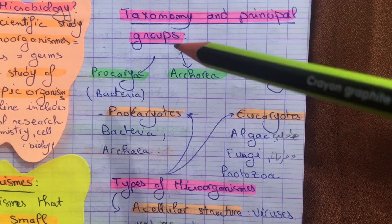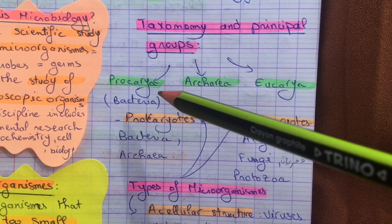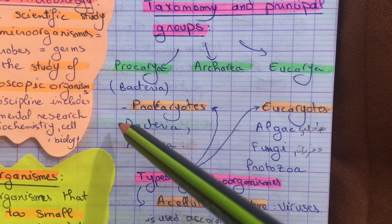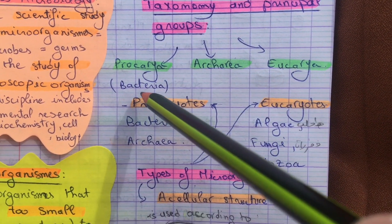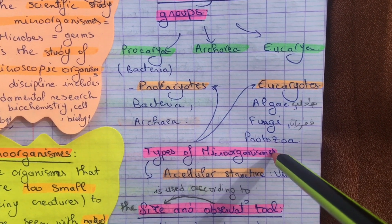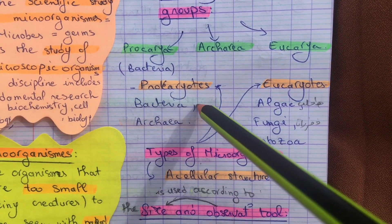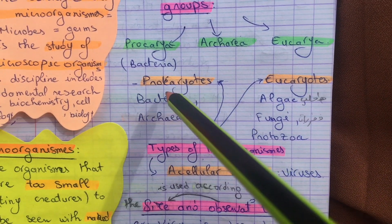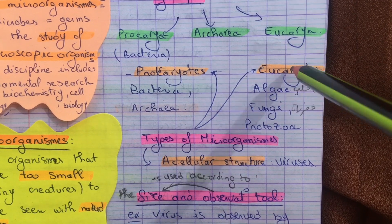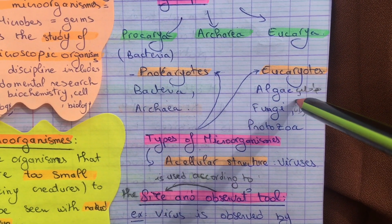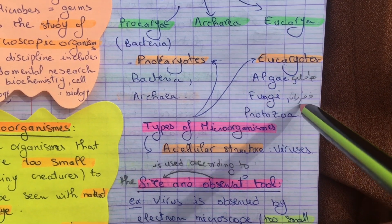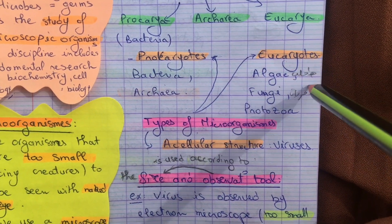This is the taxonomy and principal groups. We have the Prokaryota, Archaea, and Eukaryota. The Prokaryota include bacteria, a type of micro-organism. The Eukaryota include algae, fungi, and protozoa.